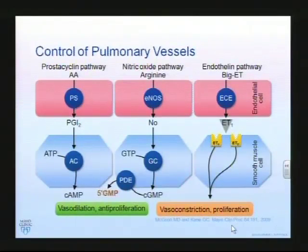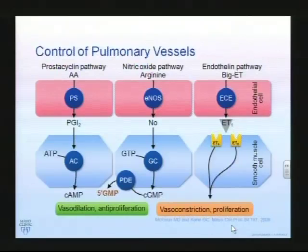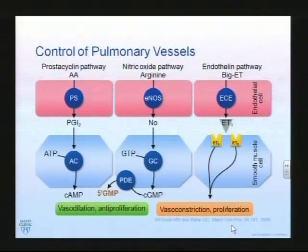There are several mechanisms by which agents can act in this condition. Those include the prostacyclin pathway, the nitric oxide pathway, and the endothelin pathway, which is essentially antagonistic to the nitric oxide pathway. Medications have been developed to attack each of those mechanisms pertaining to the control of vascular smooth muscle.